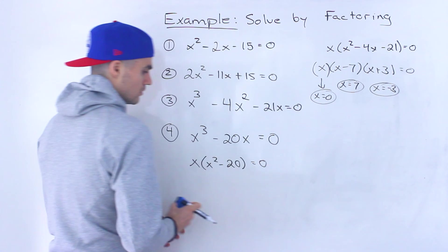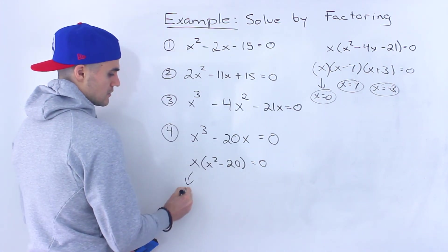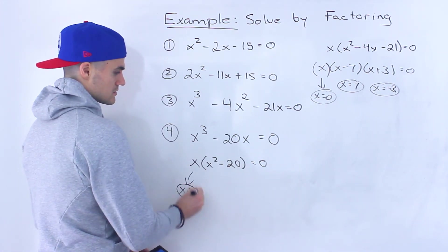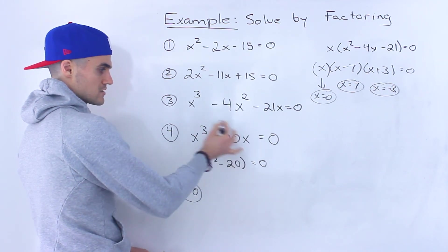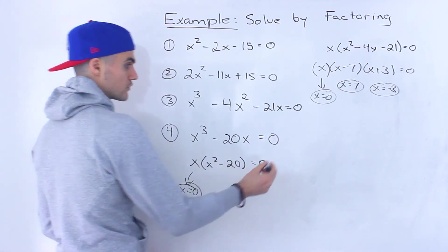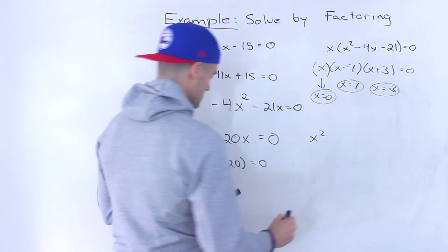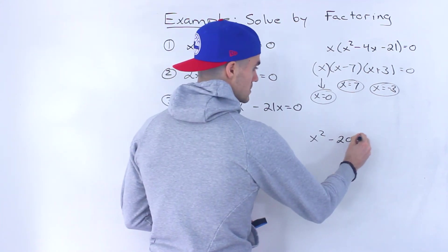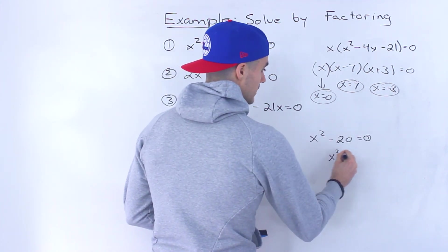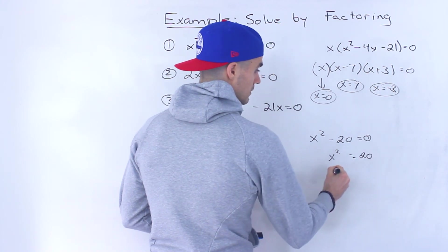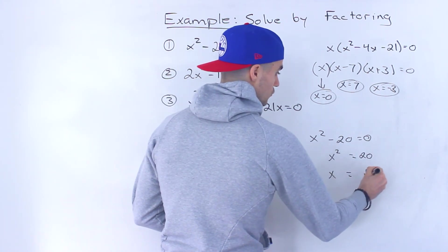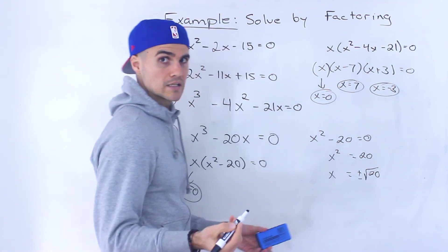Now from here though, notice that x can either be 0, that's one of the solutions to this whole thing. If we plug in 0, the left side equals the right side. Over here, when does this bracket x² - 20 = 0? Well, when x² = 20, so when x = √20, and remember square root can be plus or minus.